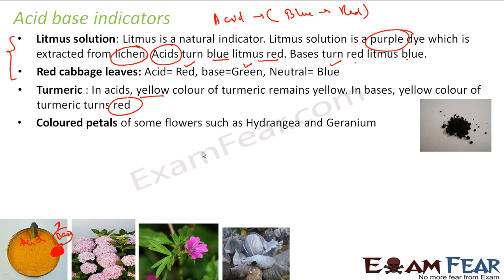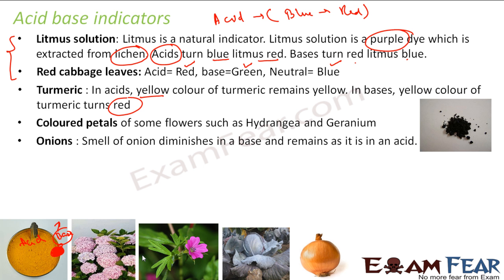We also have color petals of some flowers like hydrangea and geranium, which are used for finding acid or base. Onion is also used as an olfactory indicator — in this case, the color does not change, but the smell changes. If you put a basic substance, the smell will diminish, but if you put acid, the smell doesn't go.